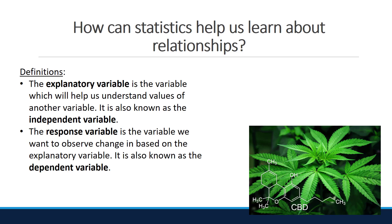The response variable is the variable we want to observe change based on the explanatory variable. It is also known as the dependent variable. In the above news article, number of opioid prescriptions would be the response variable, since the researchers are looking to see if the number of prescriptions changes based on whether a state has marijuana laws.